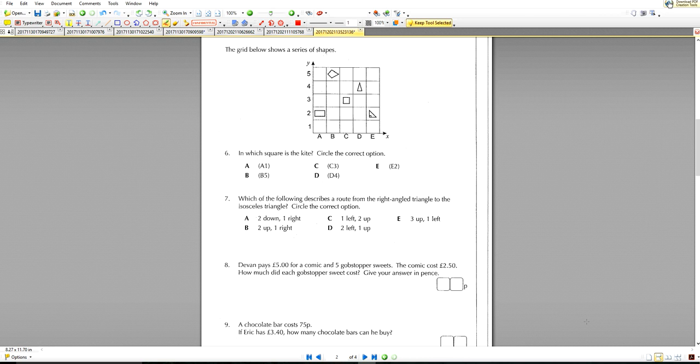Question number six now. The grid below shows a series of shapes. In which square is the kite? So the kite shape is over here. Rectangle, square, isosceles triangle, this one is the right angle triangle. So we're going to go cross by B. We're going to go up by five. So the answer is B5.